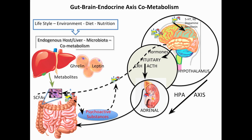Microbiota and diet feed the production of psychoactive metabolites to the host, affecting the HPA axis. The microbiota gut-brain axis also has several nodes and branches, including an endocrine axis.